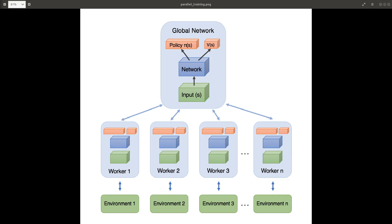So you might ask: what is this Asynchronous Advantage Actor-Critic algorithm? This algorithm was released by Google DeepMind in 2016, and it essentially beat Deep Q-Network. It was faster, simpler, more robust, and able to achieve much better scores on standard deep reinforcement learning tasks. It could work in continuous as well as discrete action spaces, and became the go-to deep RL algorithm for new challenging problems with complex state and action spaces.